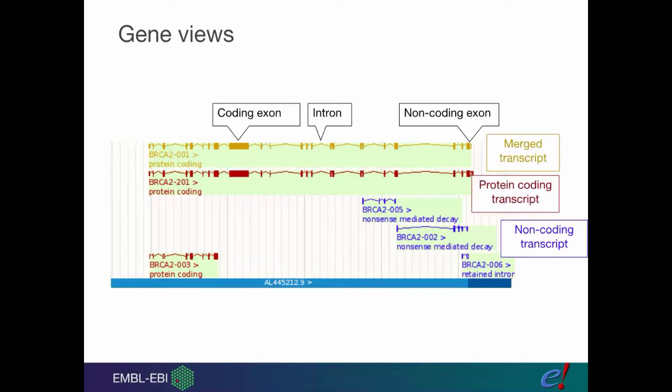These are all different transcripts of BRCA2. They have the name BRCA2 and a number. They have different colors, and the colors mean things as well.